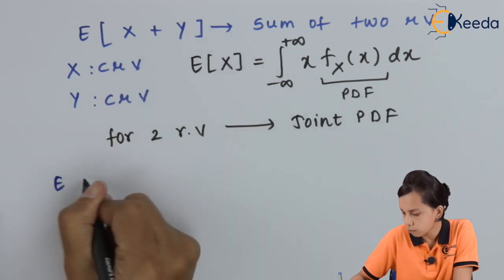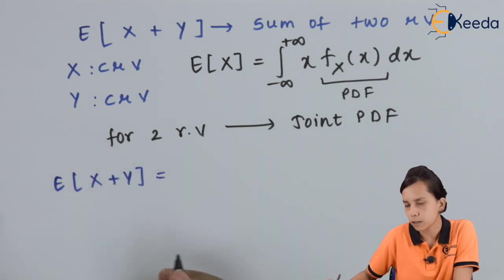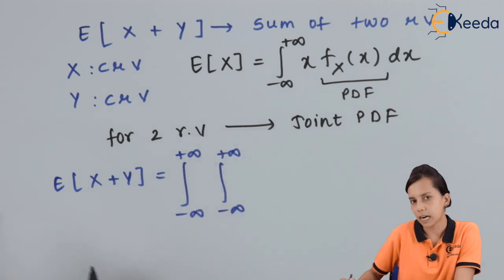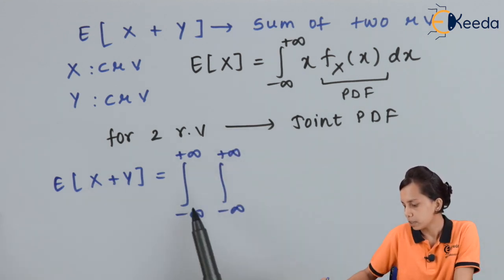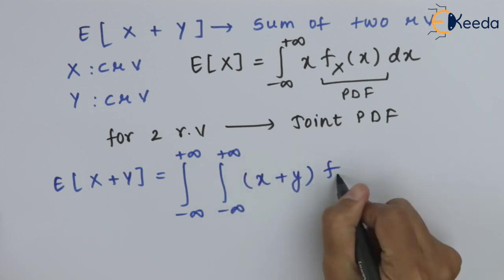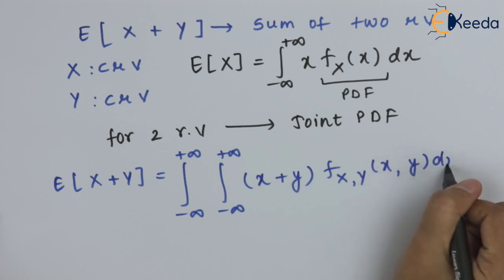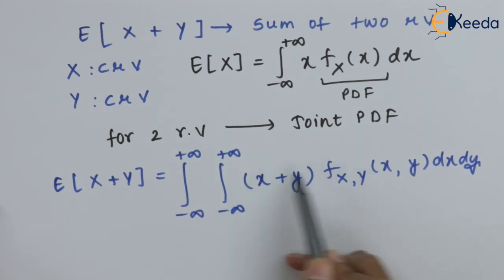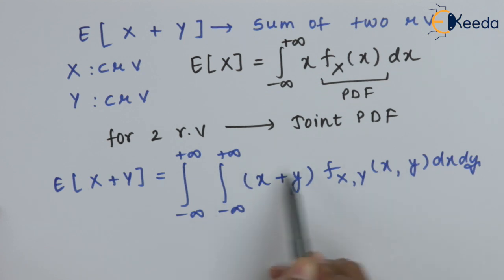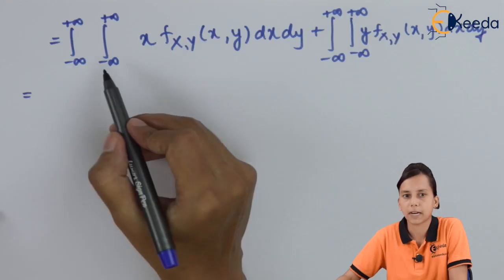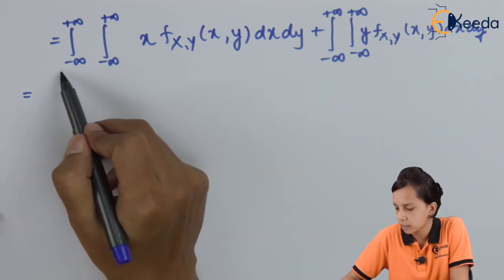If I want to write down the expectation or mean for X plus Y, then E of X plus Y will be equal to a double integral from minus infinity to plus infinity for both variables, because we are dealing with two random variables — that is why this will be replaced by two integrations — multiplied by the joint PDF f_{XY}(x, y), inside the bracket.